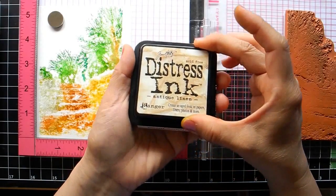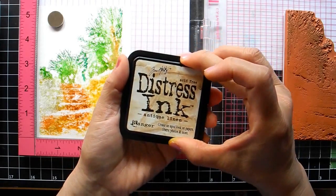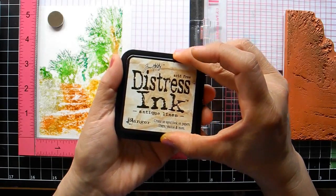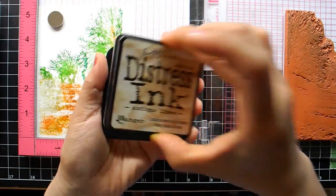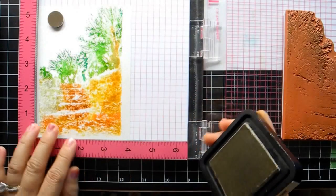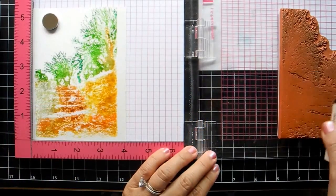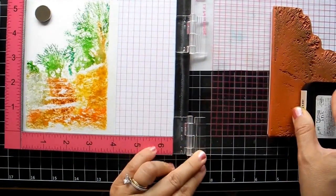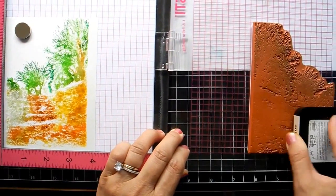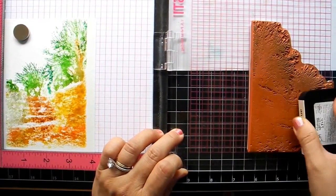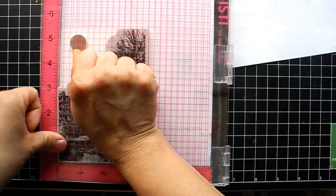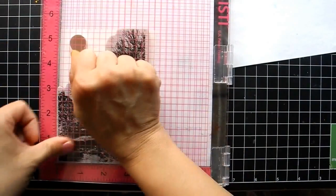Now I'm taking out Antique Linen. Why this color? Because it's light and it's neutral, so it should not go wrong and it won't dominate the color too much, but it will give some definition to the stamp design.